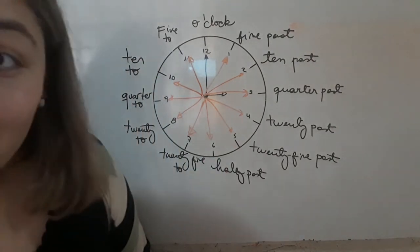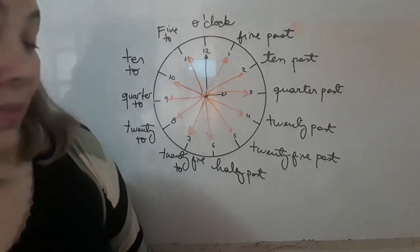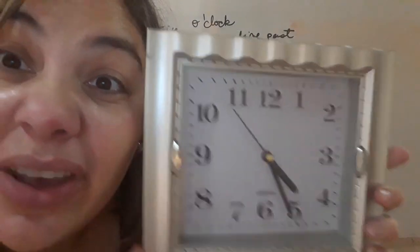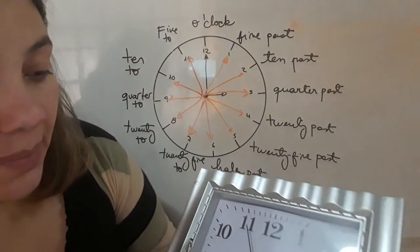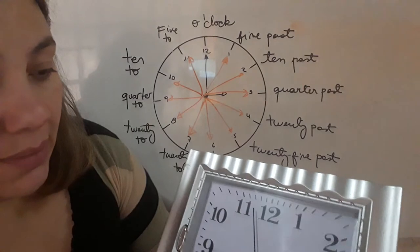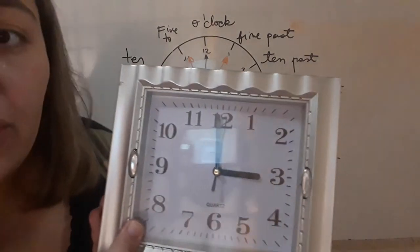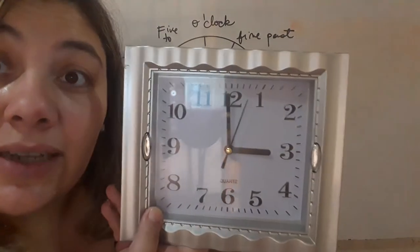Right. Bueno, otra cosa que les quería marcar, que se los quería marcar aquí, en este reloj feo de mi mamá, pero no le digan que es feo. Vamos a pensar. Vamos a empezar, lo voy a mover así. Quiero que presten atención. Aquí son las tres en punto.